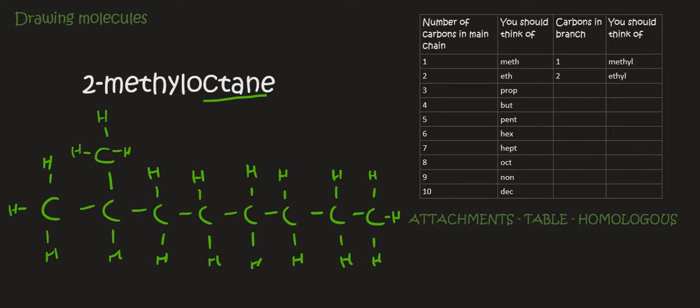If you have a look, each carbon — for example this one will have 1, 2 — this carbon over here has 1, 2, 3, 4 bonds. And so there it is. We've got 2-methyl-octane.